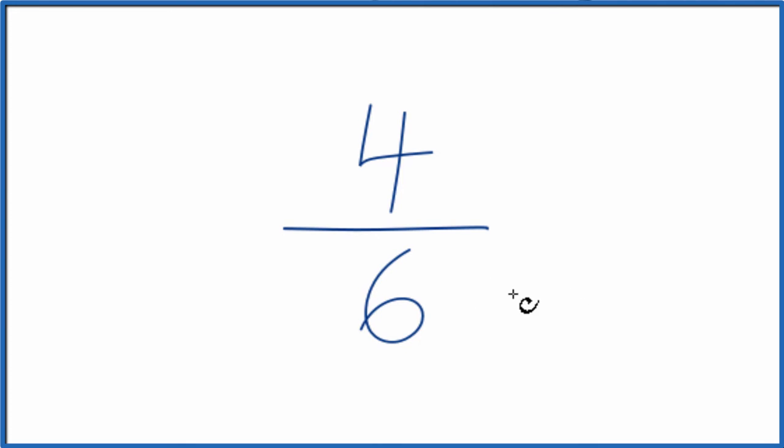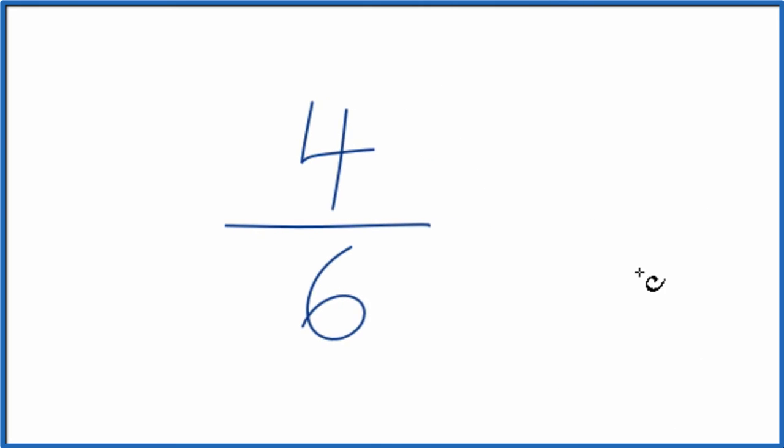To do that we need to find a common factor, something that goes into 4 and 6. So here are the factors for 4 and 6. We're looking for the greatest common factor between 4 and 6, and I see the greatest common factor. That's going to be 2.